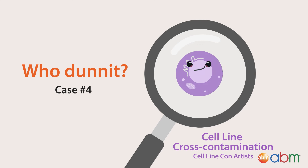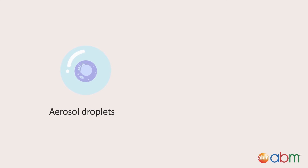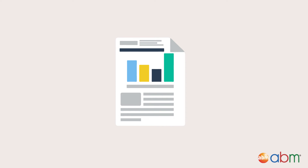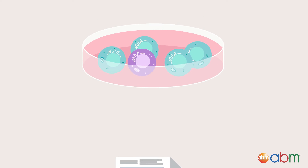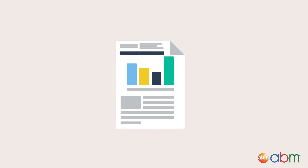Another common type of contamination is cell cross-contamination. This occurs when a different cell line gets mixed in with the desired cells due to cells traveling in aerosol droplets or on contaminated equipment and media. For example, a scientist could be writing up results for an experiment performed on what they thought were human kidney cells, but unbeknownst to them, their sample could have contained HeLa cells that somehow made their way into the cell culture plate. Therefore, their results are no longer valid as the experiment was performed on HeLa cells rather than the desired kidney cells.